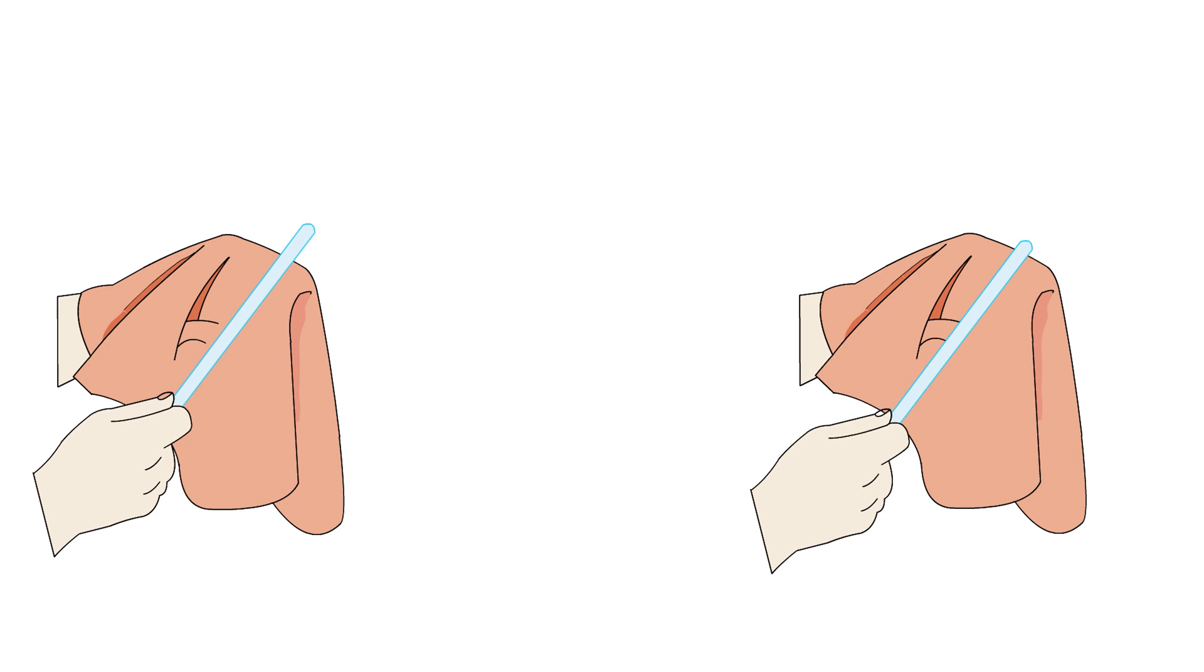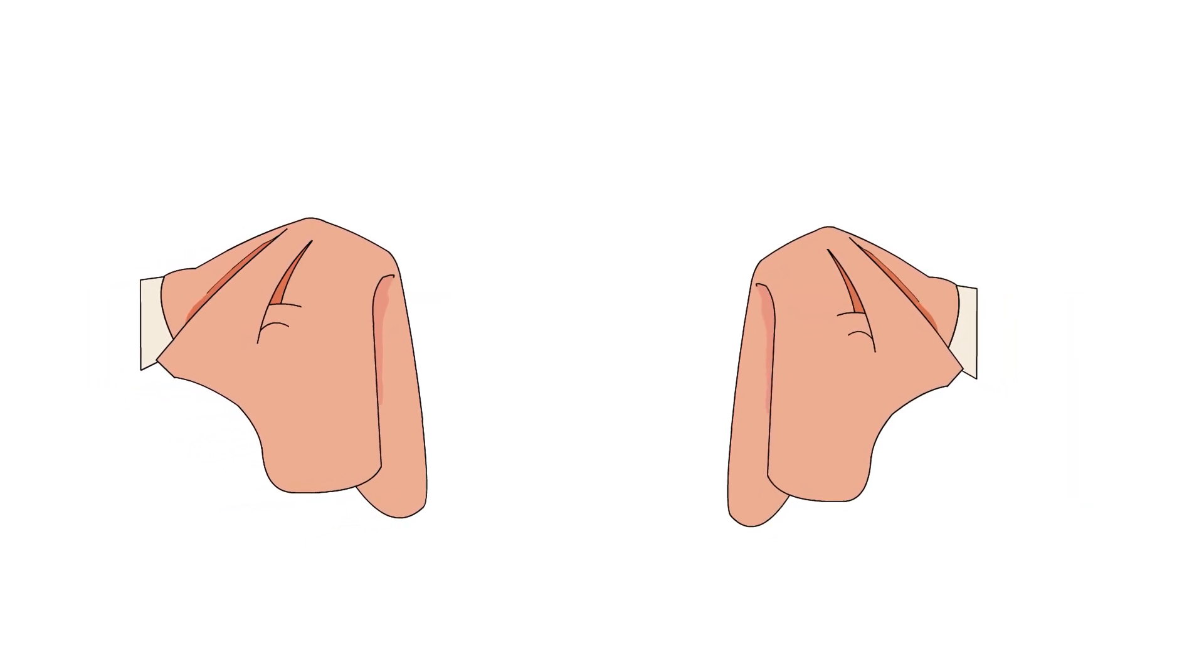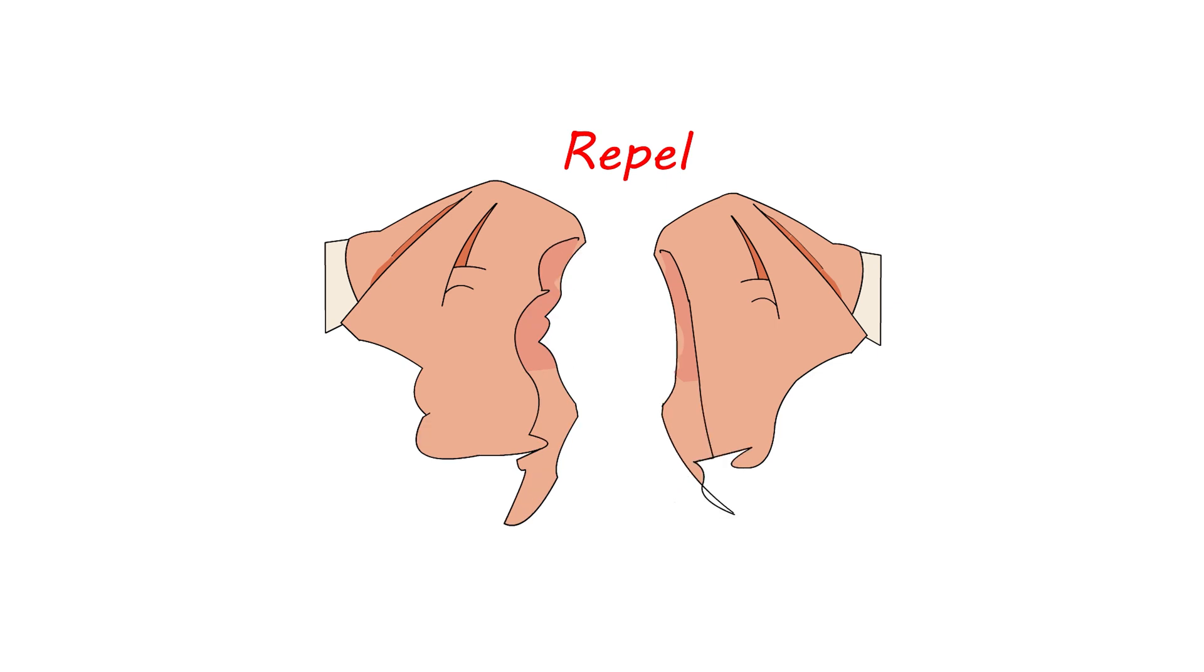It was observed that if two glass rods rubbed with wool or silk cloth are brought close to each other, they repel each other. The two strands of wool or two pieces of silk cloth, with which the rods were rubbed, also repel each other.